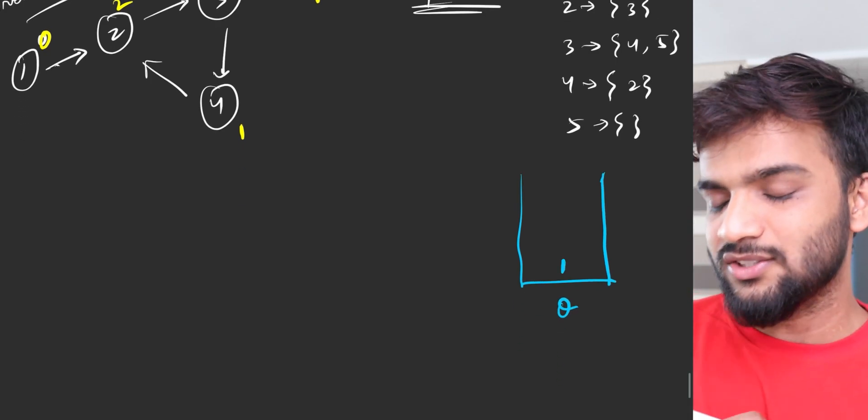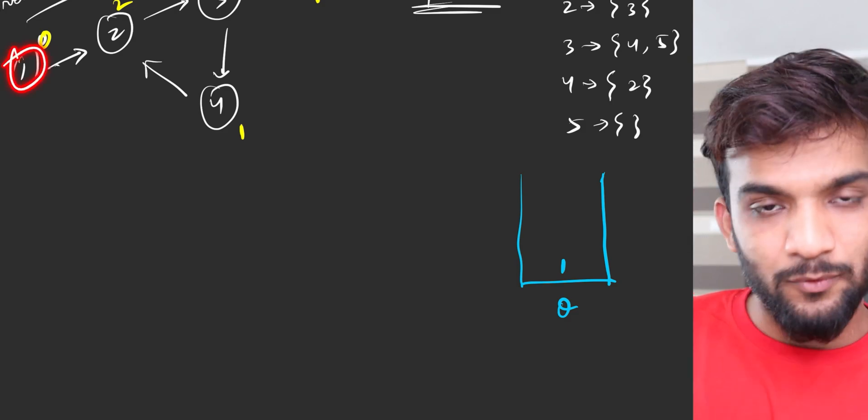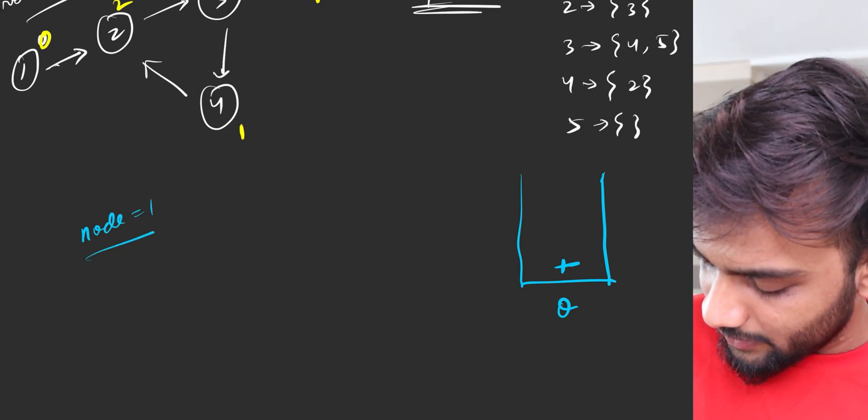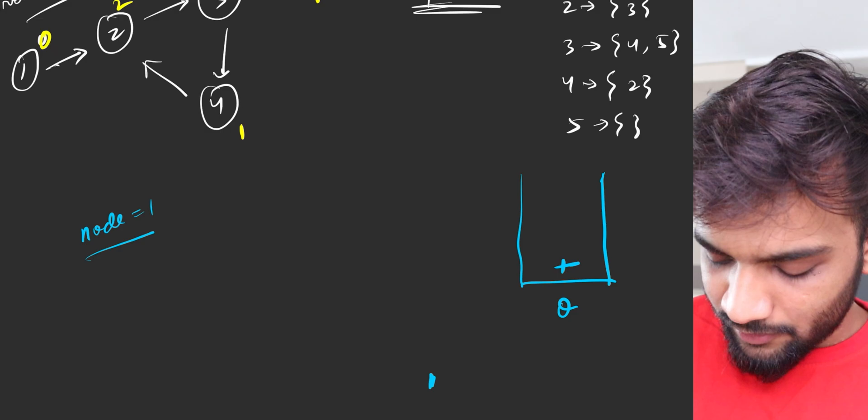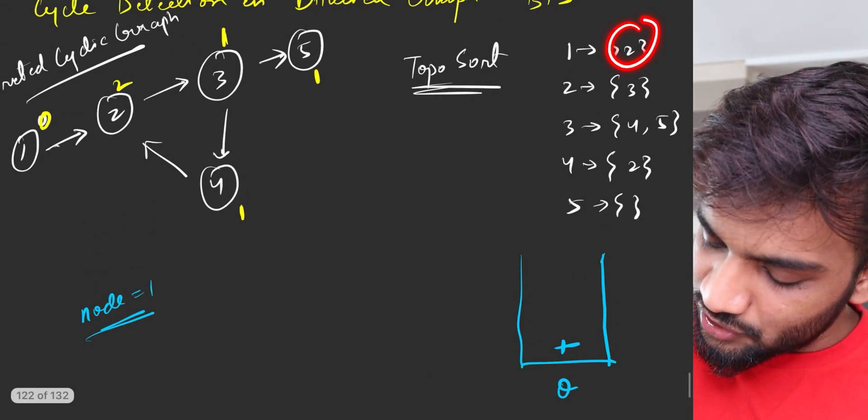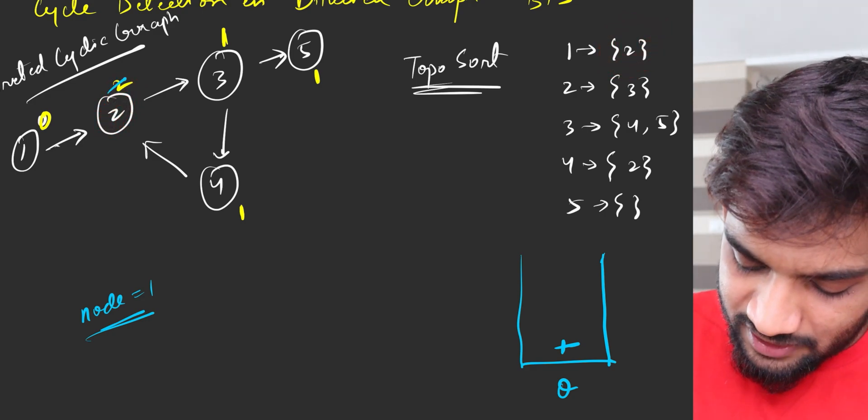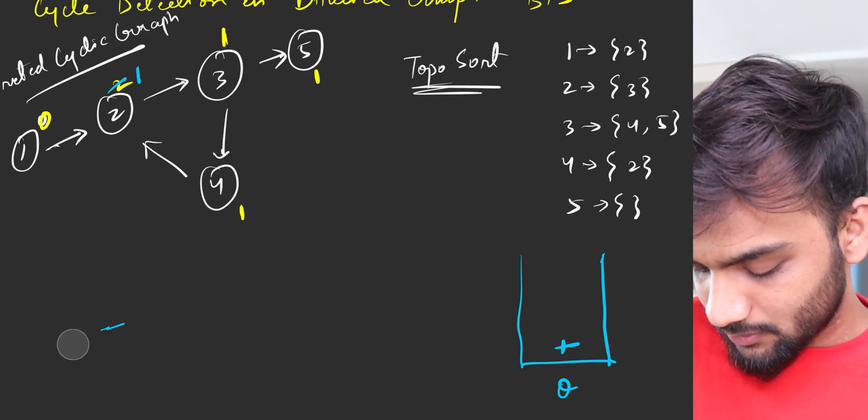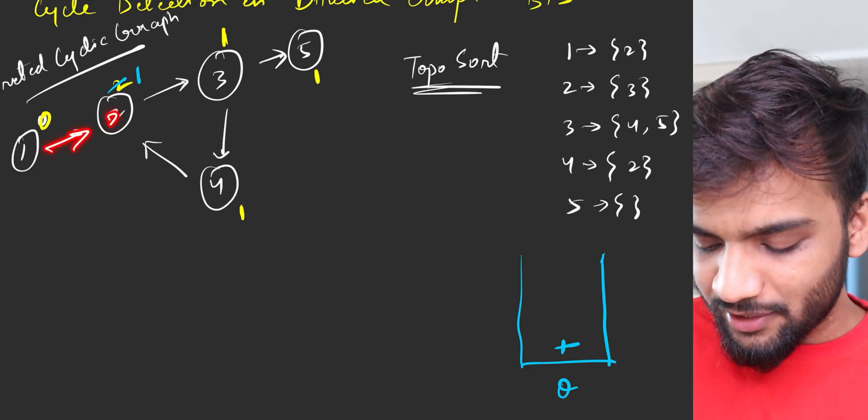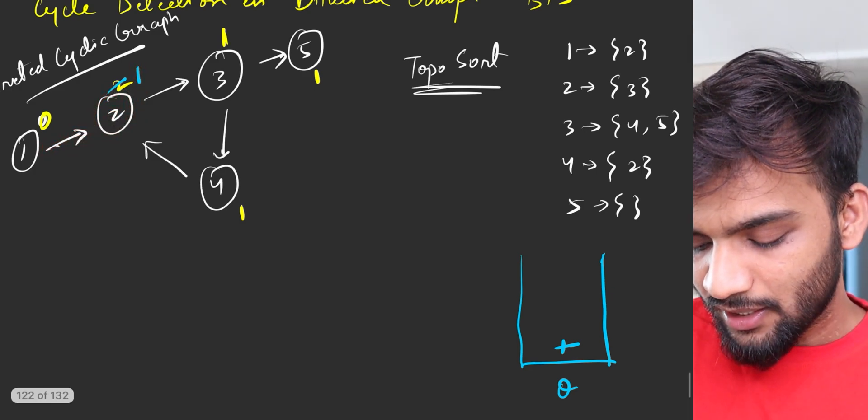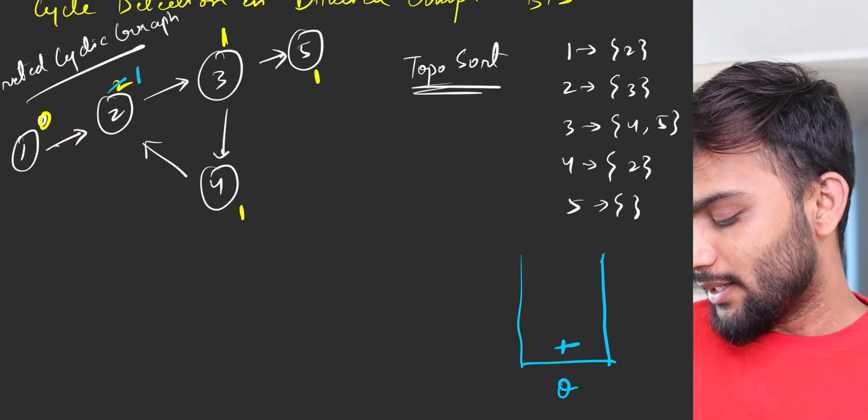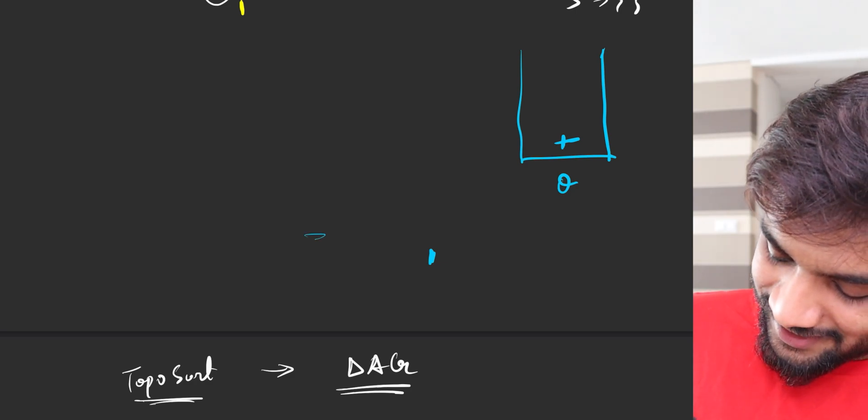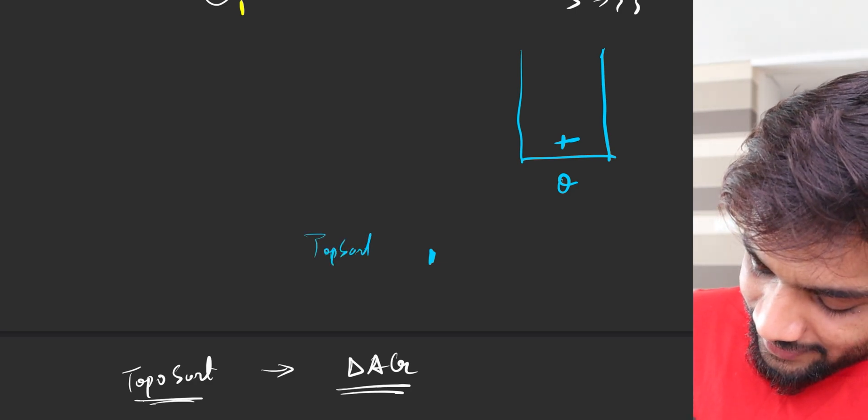So let's start off with a queue data structure. And in this queue data structure, initially keep the node with the indegrees zero, which is the one. Now let's start the algorithm. So the algorithm states, gets the first node and you can put that into the topo sort array. So let's put it for node one. Who are the adjacents? So the adjacent is two. Go to two and reduce its indegree by one, so this will become one. So we're done. Now what happens is, the moment you reduce its indegree by one, the indegree is one and the queue is empty.